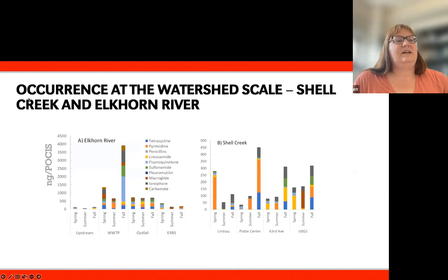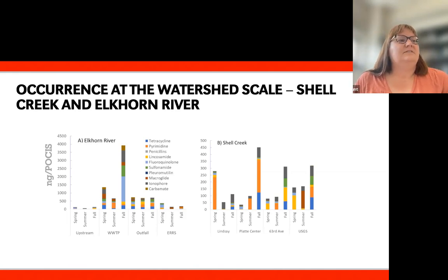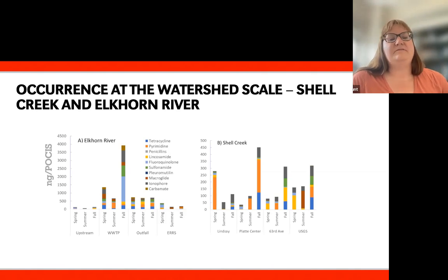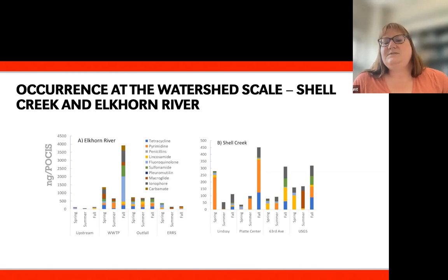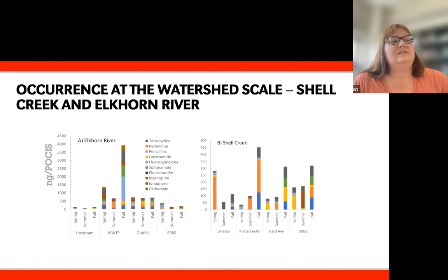Looking at a different study that contrasts the Elkhorn River, which has more municipal wastewater input, with Shell Creek, which is more of an agricultural watershed, we see a number of differences. On the left-hand side with the Elkhorn River data, some of our highest concentrations are coming from the wastewater treatment plant effluent. Wastewater is disinfected seasonally — spring and summer — and after that disinfection season ends in fall, we see much higher loading of antibiotics in the effluent. The stacked bar charts show different antibiotic classes, and this study investigated a much broader number of antibiotic classes.